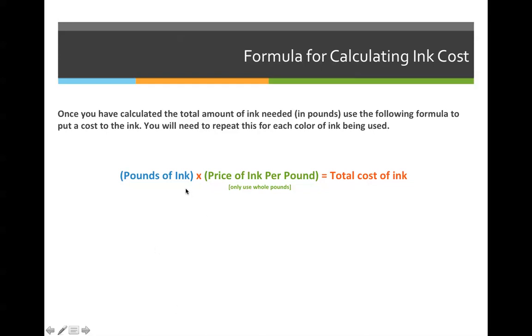But the basic formula we're going to use is the number of pounds of ink that you calculated in the previous section. We're going to multiply that by the price for every one pound of ink to get the total cost of the ink.